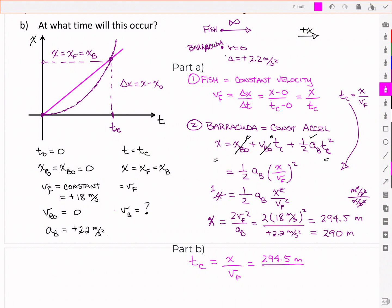294.5 meters divided by 18 meters per second gives me a value of 16.36 seconds. Or, to the two significant digits that I see in the other values, 16 seconds.